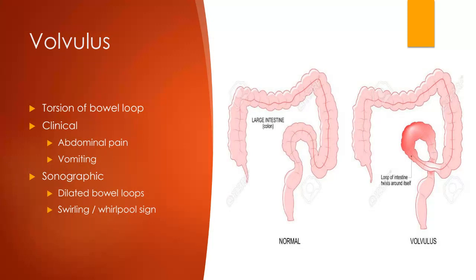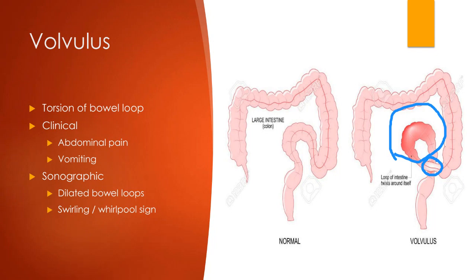Next is volvulus — when the bowel actually twists on itself, unlike intussusception which telescopes into the next segment. Volvulus is when it twists and cuts off its own blood supply. Clinically, the patient will have pain and vomiting. On ultrasound, we still see dilated bowel loops, and we can also see a whirlpool sign or swirling appearance of blood flow in that region — though we won't see blood flow at the actual twist point since that's where it's cutting off. Volvulus is a somewhat more abstract ultrasound concept.